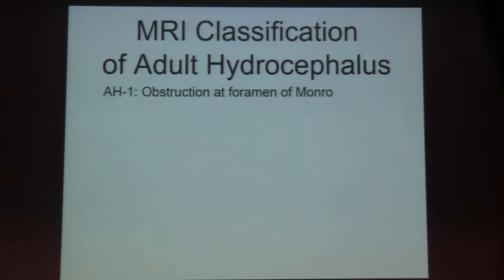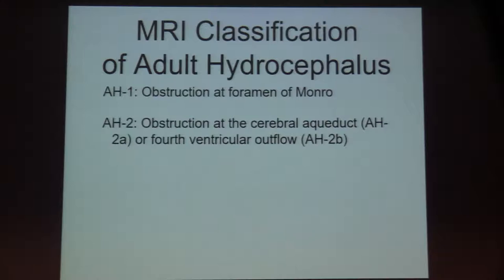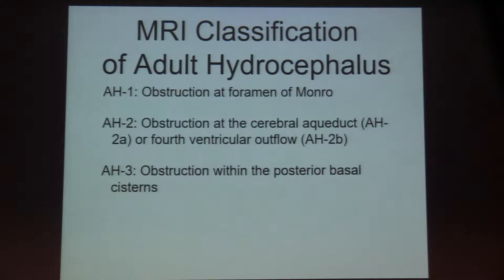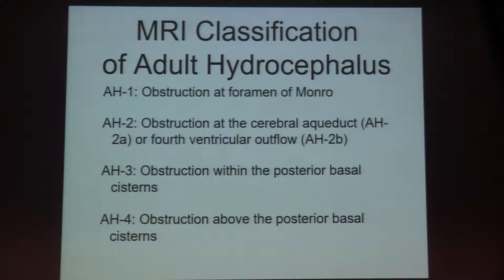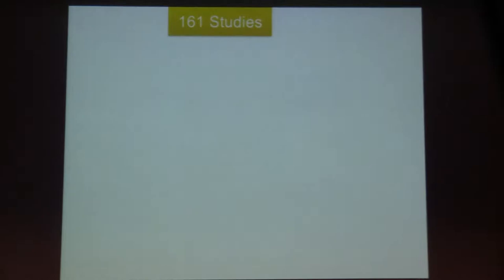This classification system is a helpful conceptual framework for understanding adult hydrocephalus. Type 1 is obstruction at the foramen of Monroe. Type 2 is obstruction between the third ventricle and the fourth ventricular outflow — 2A at the cerebral aqueduct, 2B at the fourth ventricular outflow itself. Types 1 and 2 are the non-communicating, intraventricular obstruction types. Type 3 involves obstruction within the posterior basal cisterns. Type 4 is subarachnoid space obstruction above the posterior basal cisterns. Type 5 are cases not otherwise specified.